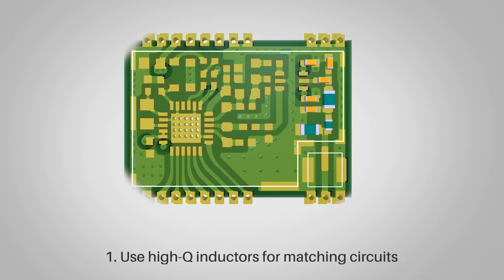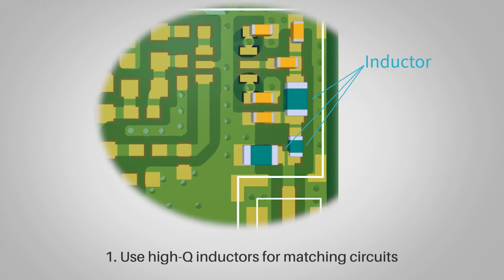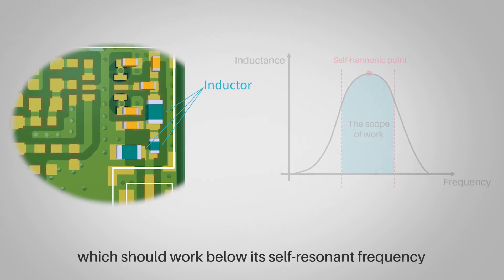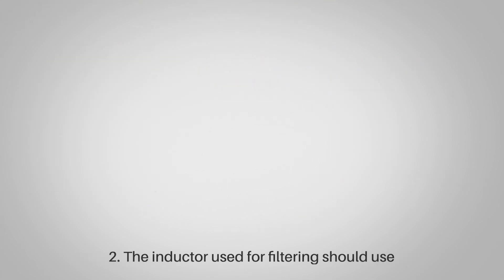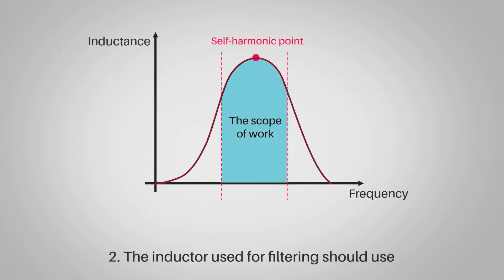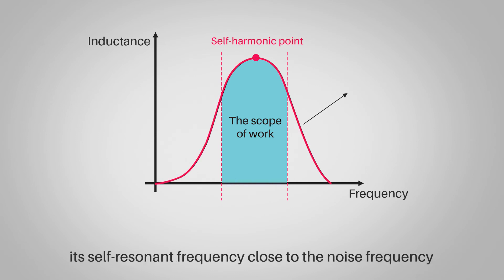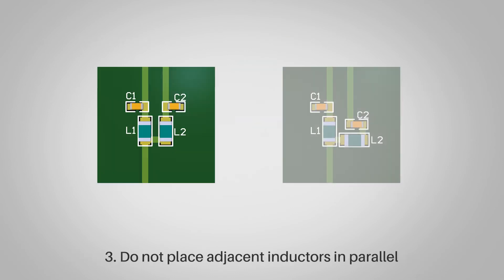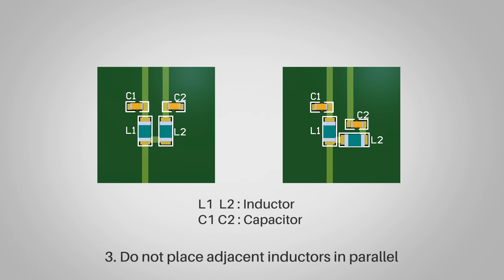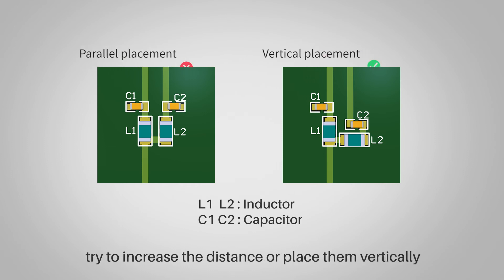Inductor usage rules: Rule one: Use high-Q inductors for matching circuits, which should work below their self-resonant frequency. Rule two: The inductor used for filtering should use its self-resonant frequency close to the noise frequency. Rule three: Do not place adjacent inductors in parallel; try to increase the distance or place them vertically.